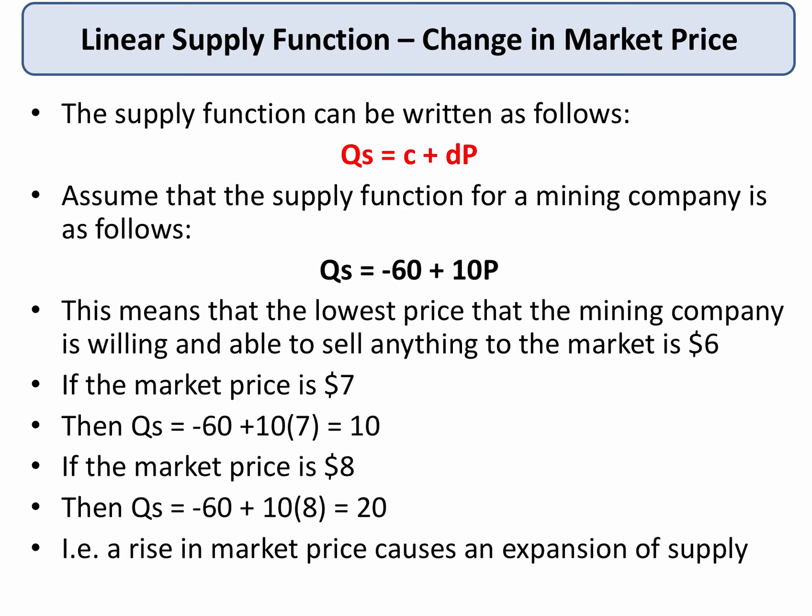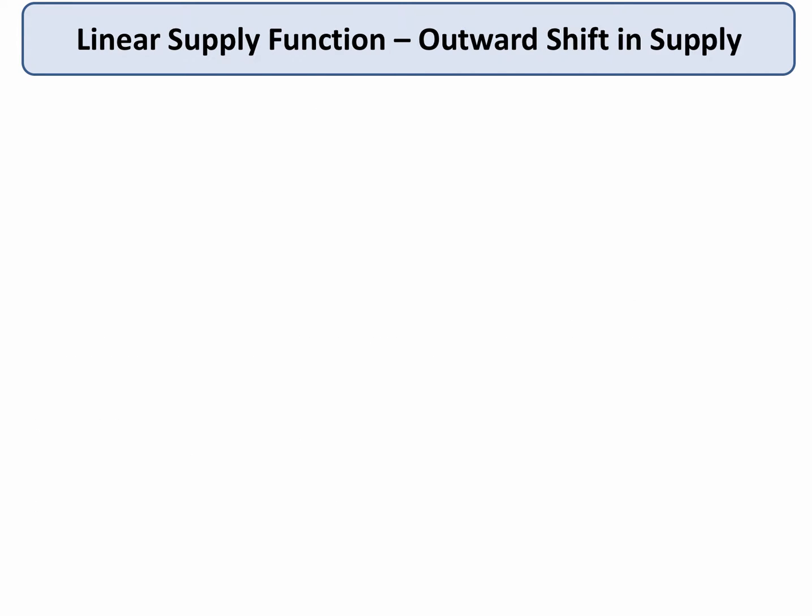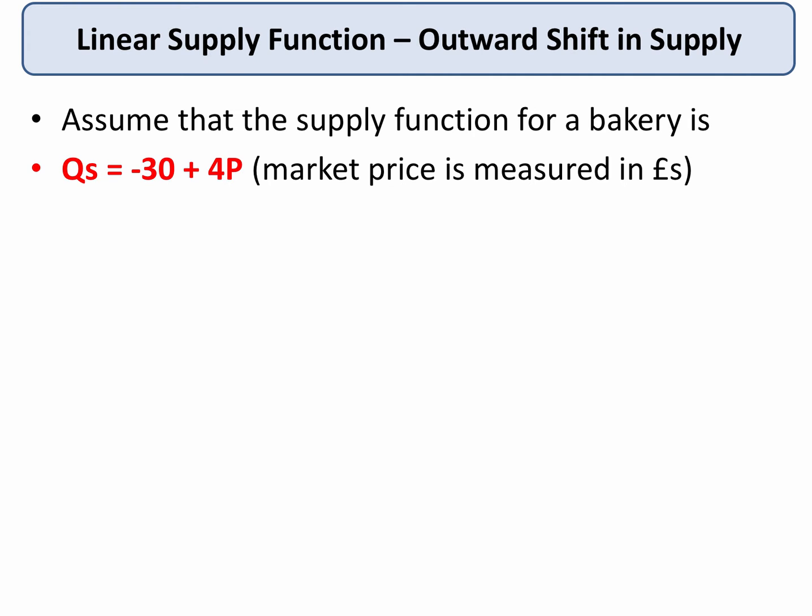Of course, changes in cost can cause shifts in supply. Let's look at a bakery example. Assume the supply function for a bakery is minus 30 plus 4P, where the market price is measured in pounds. Assuming the market price is £12 — quite an expensive loaf — the quantity supplied will be minus 30 plus 4 times 12, which equals 18.